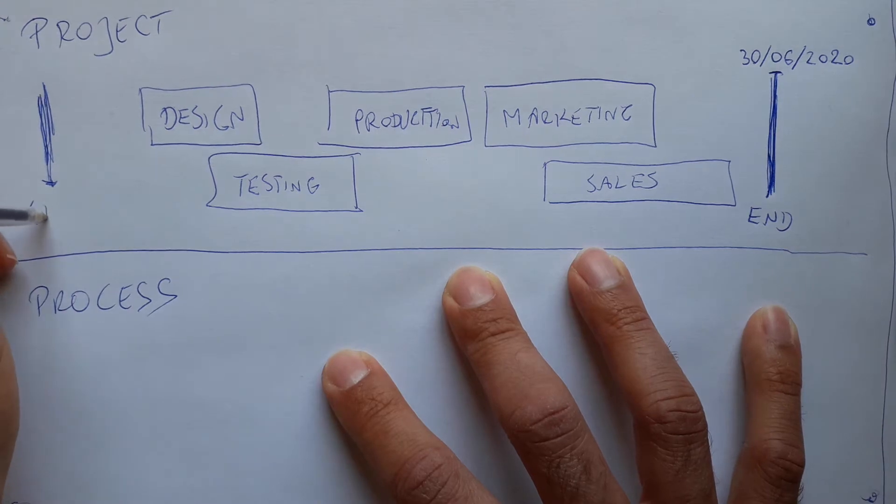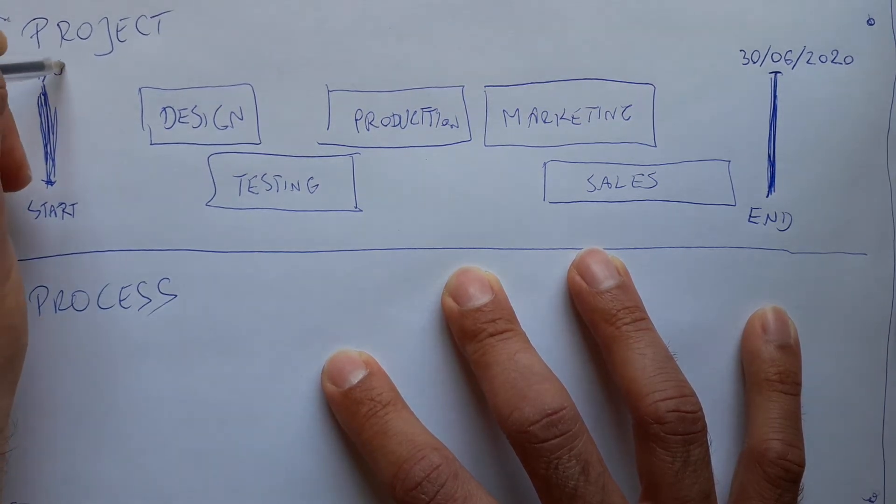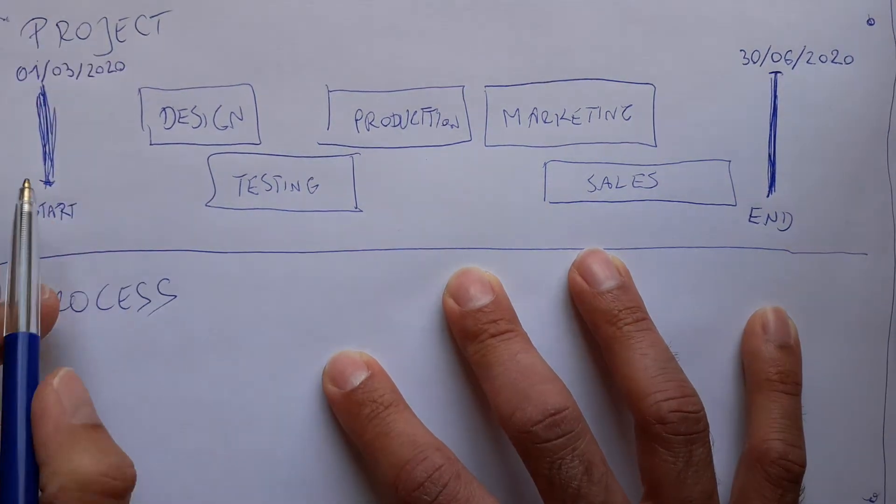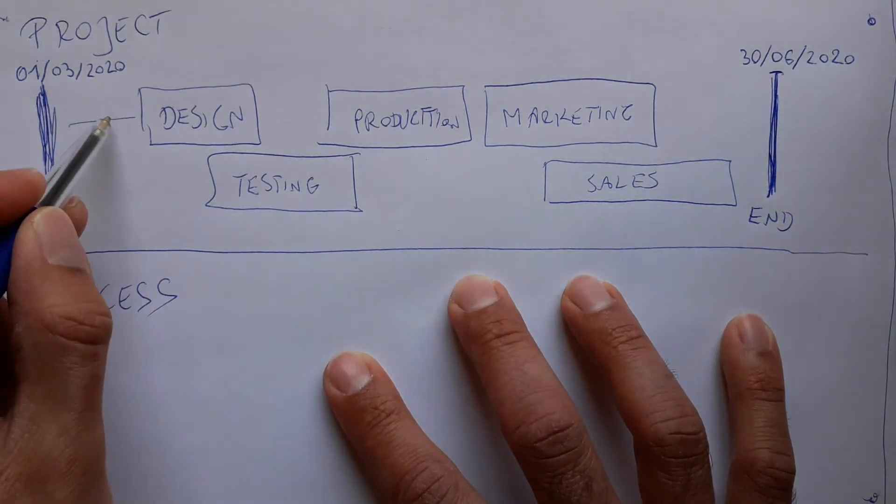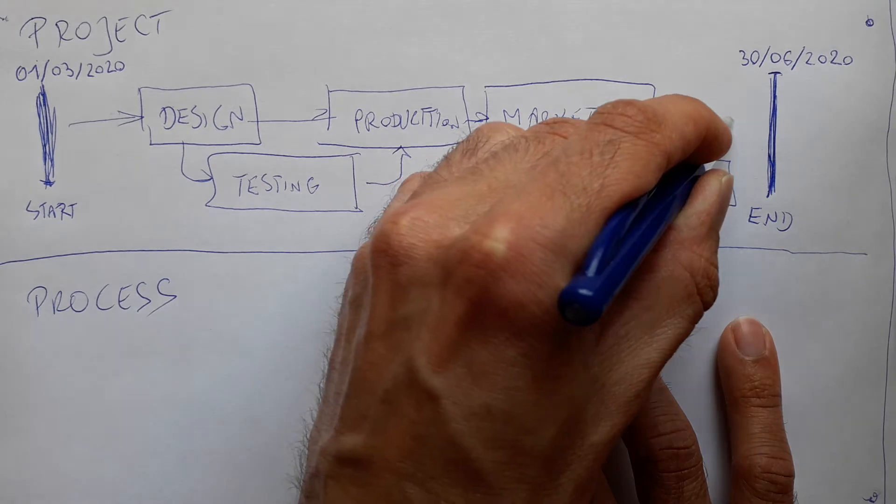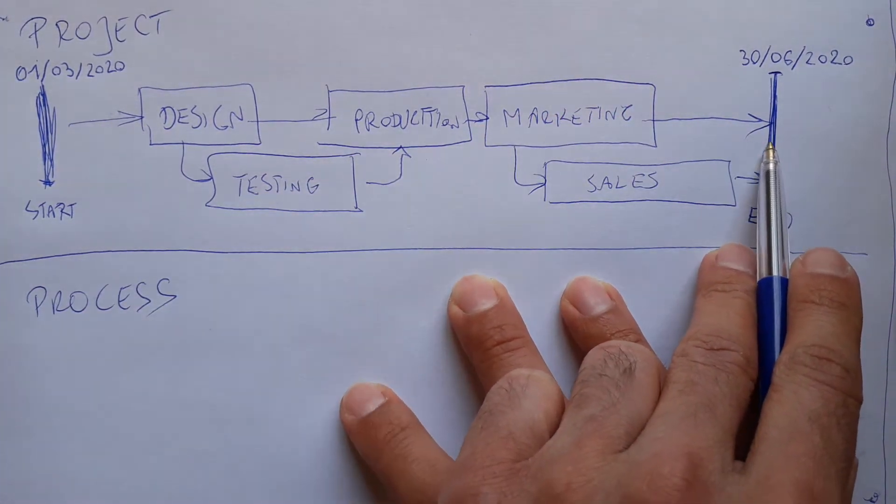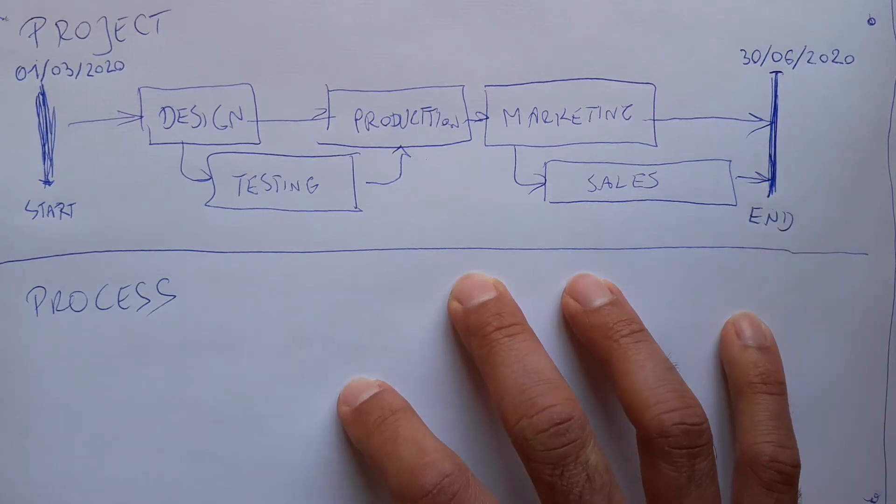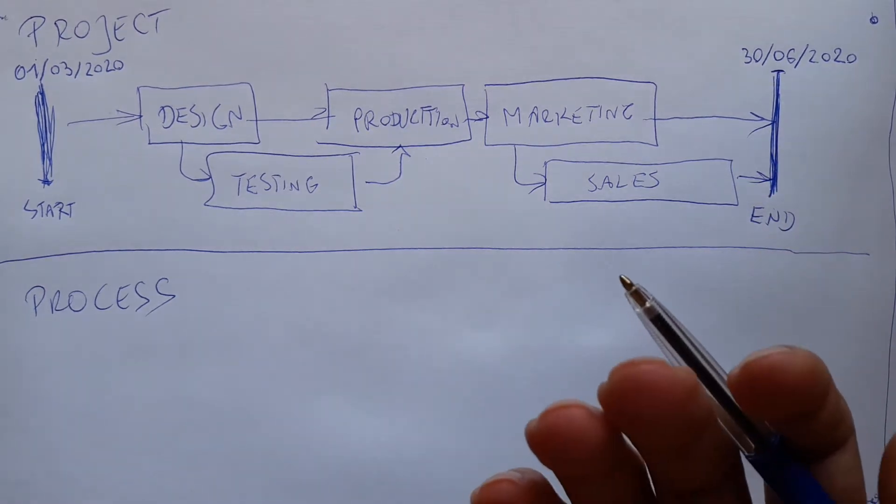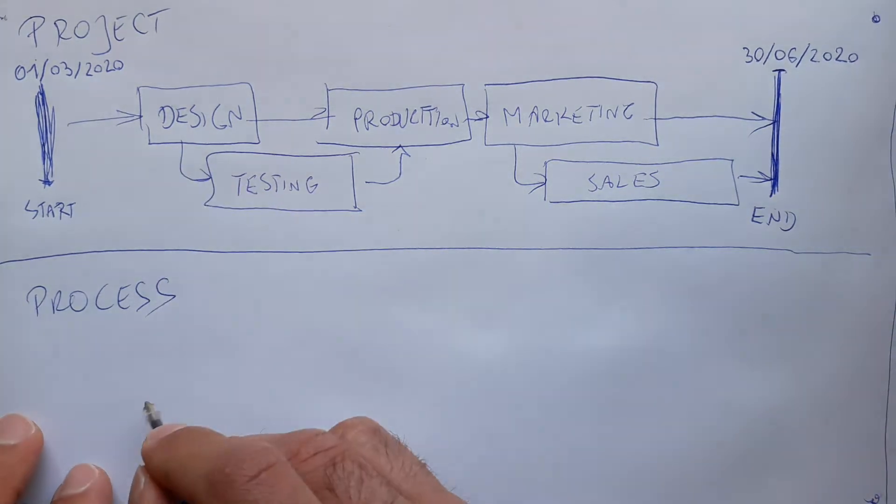And it will start, the kickoff of the project, the first meeting of the project, will be at first of March 2020. So you have the set of activities and it's going like this and here and there and somehow the people need to work and then it's done and then it's finished. That's it. Whereas the process actually doesn't have any time constraint. It just needs to have the activities.